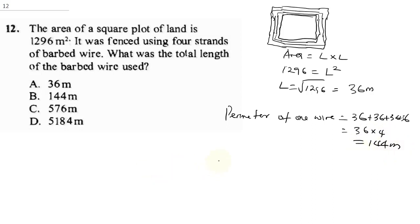Now, since we have four wires, for four wires, it's going to be 144 multiplied by 4. So when you do 144 multiplied by 4, you are going to get 576 meters. And that's the correct answer, which is C.